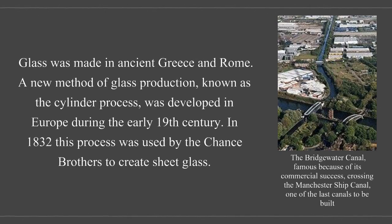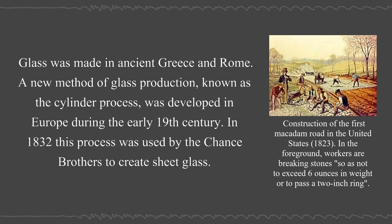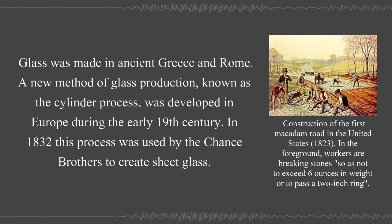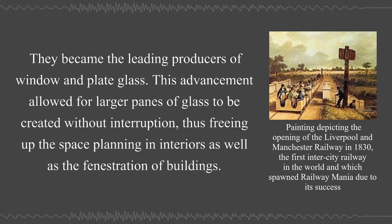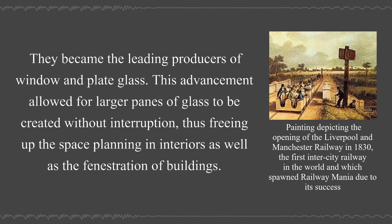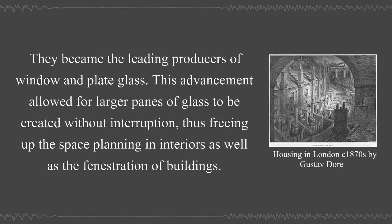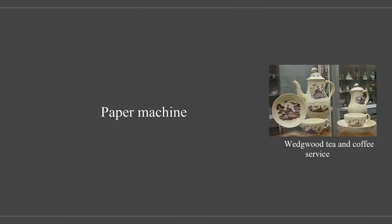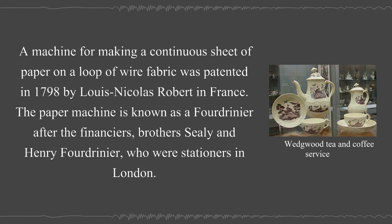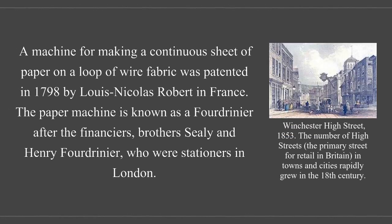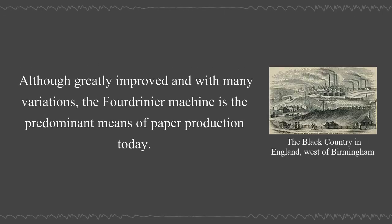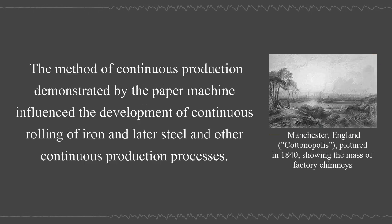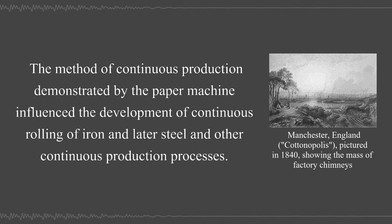Glass was made in ancient Greece and Rome. A new method of glass production known as the cylinder process was developed in Europe during the early 19th century; in 1832, this process was used by the Chance brothers to create sheet glass, allowing larger panes to be created without interruption. The Crystal Palace is the supreme example of the use of sheet glass in a new and innovative structure. A machine for making a continuous sheet of paper on a loop of wire fabric was patented in 1798 by Louis Nicolas Robert in France. The method of continuous production demonstrated by the paper machine influenced the development of continuous rolling of iron, and later steel, and other continuous production processes.